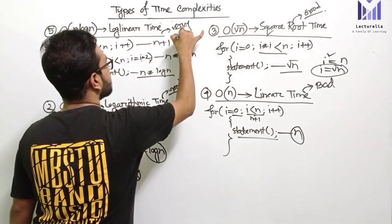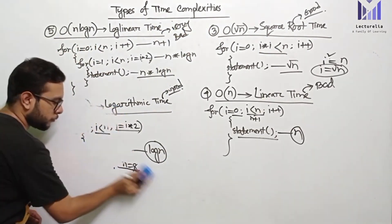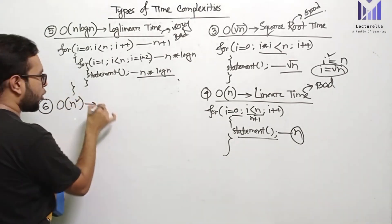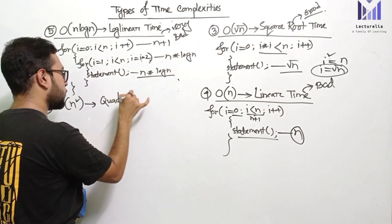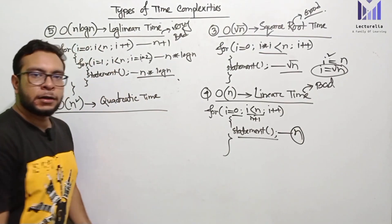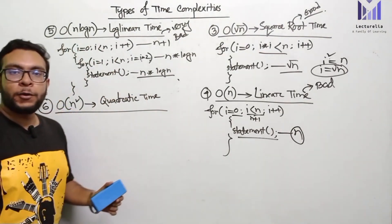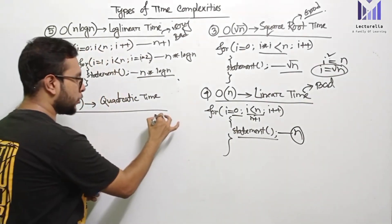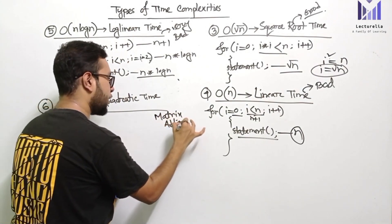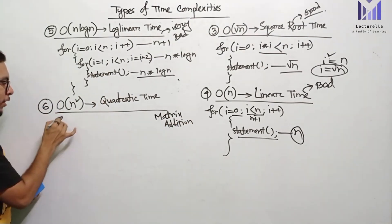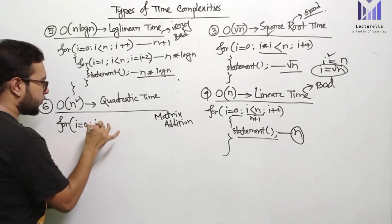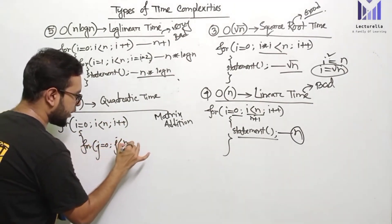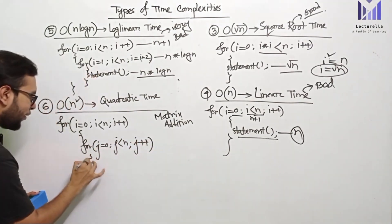The next type is order of n-squared, which is quadratic time. The run time depends on n-squared. An example is matrix addition. For example, a nested loop: the outer loop is i equal to 0, i less than n, i plus plus; and the inner loop is j equal to 0, j less than n, j plus plus.